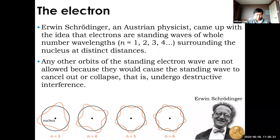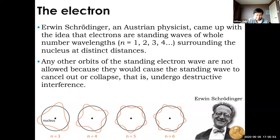Any other orbits of the electron are not allowed, because if they were, the wave would collapse under destructive interference. The picture shown is the only possibility for how electrons can exist in an atom. Orbits do not actually exist — if anything, orbits mark where you can most likely find an electron, but not for certain.